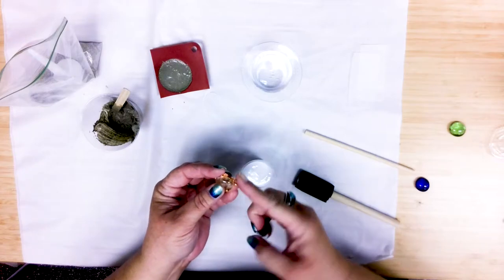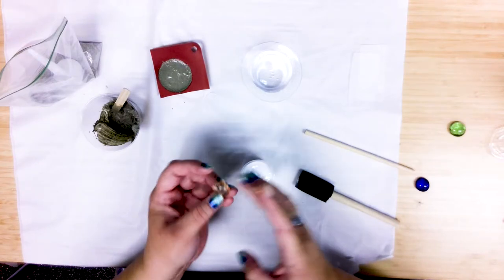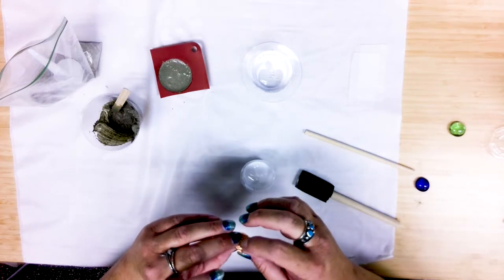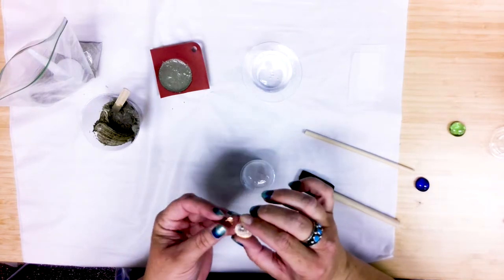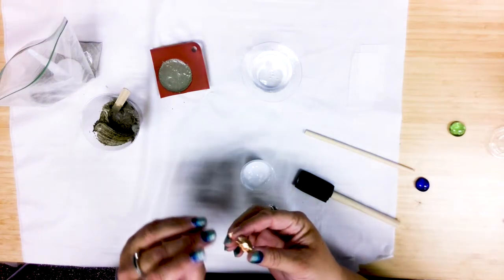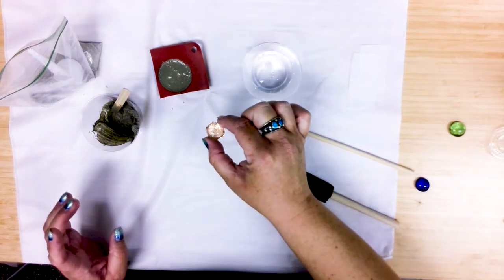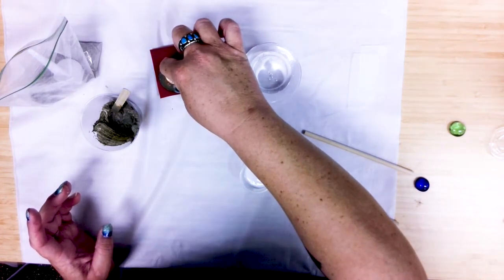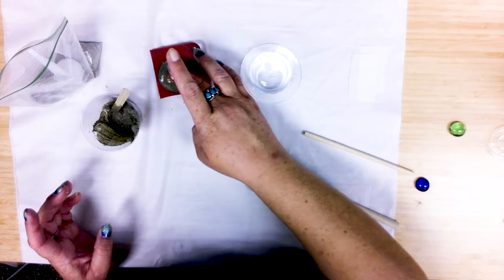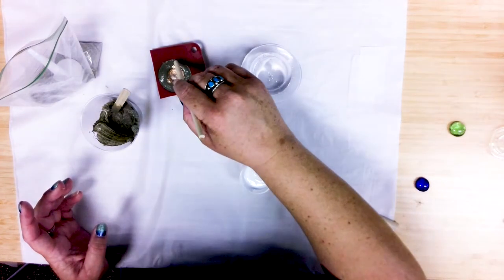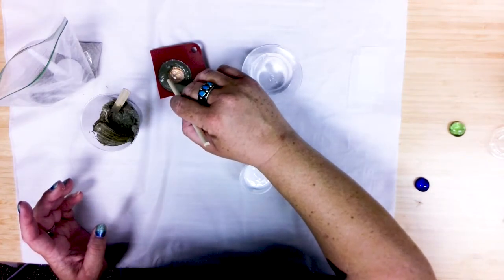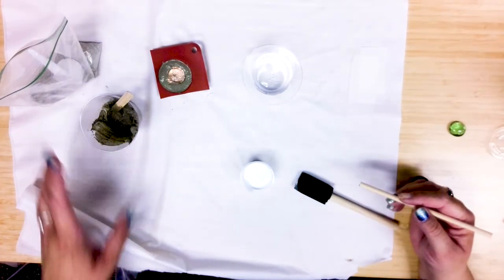And if it doesn't quite go where you want it to go, keep working with it. All right, here we go. So I'm stuck to my finger. There we go. All right. Still stuck to my finger. All right. And there now I've got kind of that metallic. I'm going to drop them right in the middle. I'm going to push it down into my mortar.